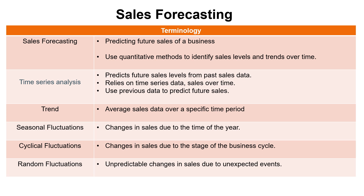Seasonal fluctuations apply to seasonal businesses — think tourism, where certain parts of the year will obviously have a lot more sales than others. Cyclical fluctuations are due to the economic business cycle — if your economy is in recession, you'll obviously fluctuate from your forecast trend sales figure. Random fluctuations are one-off and unpredictable, for example a sudden rapid change in the weather — if you're an ice cream seller, ice cream sales might be way above what was expected.